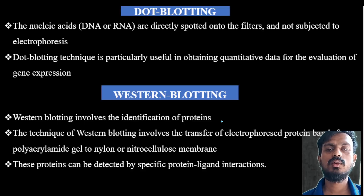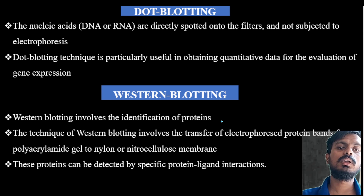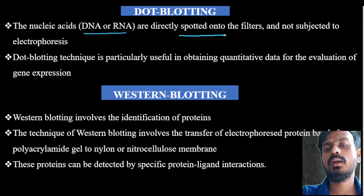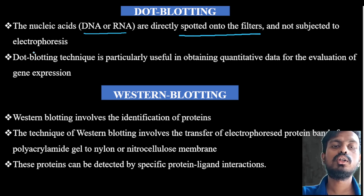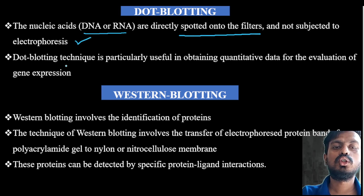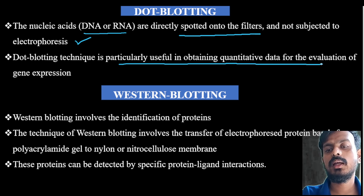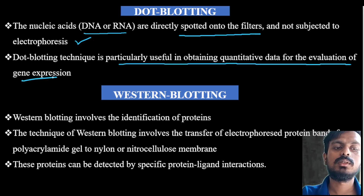Dot blotting is also known as nucleic acid blotting. Both DNA and RNA are directly spotted onto filter paper — not subjected to electrophoresis. Dot blotting is particularly useful for obtaining quantitative data for evaluation of gene expression.